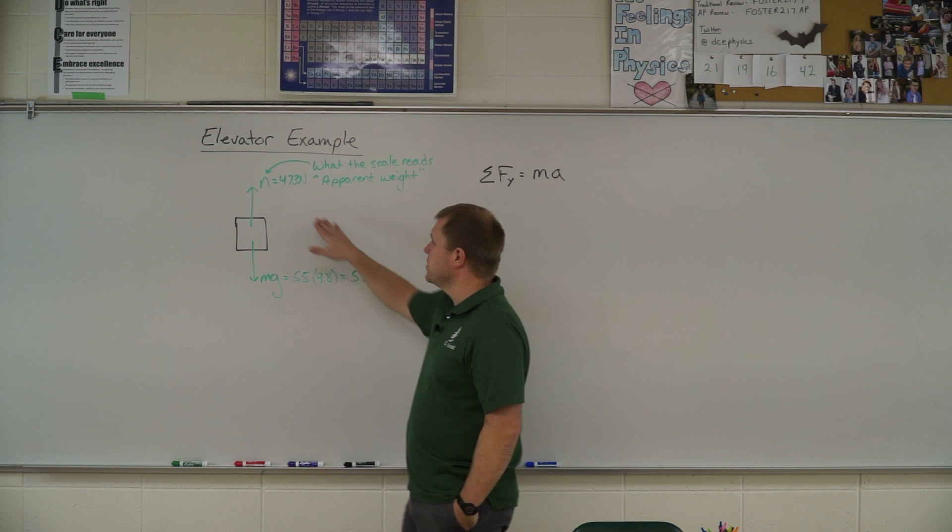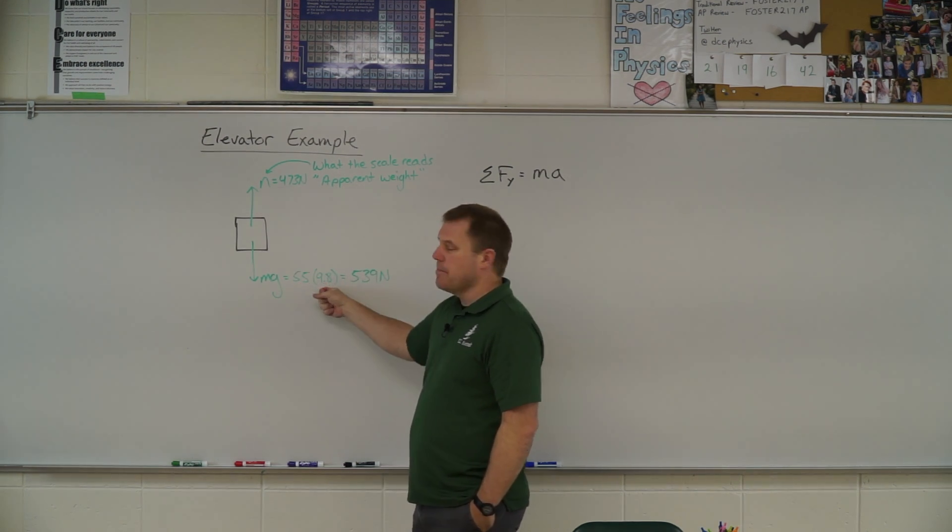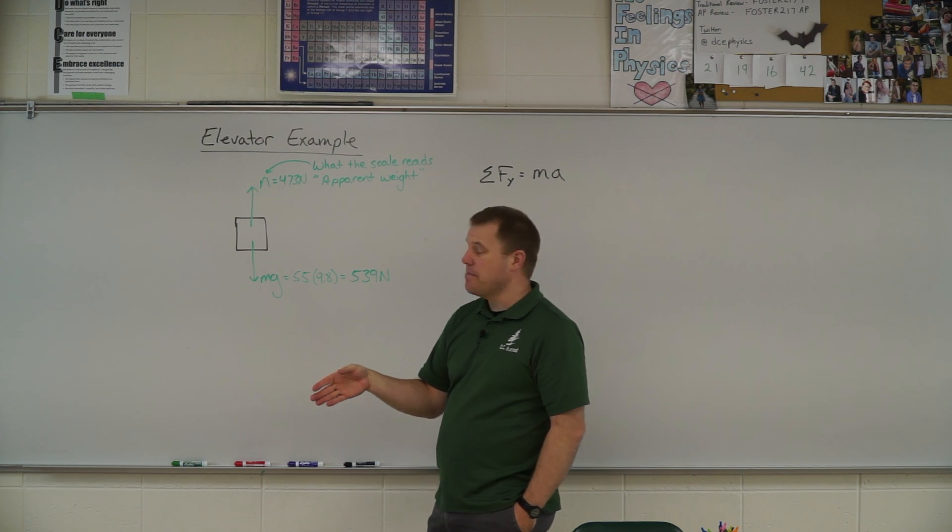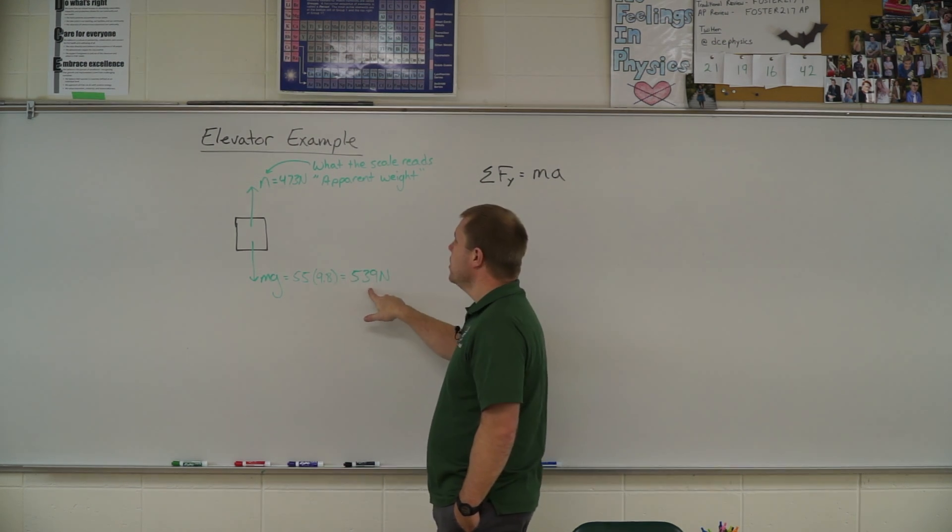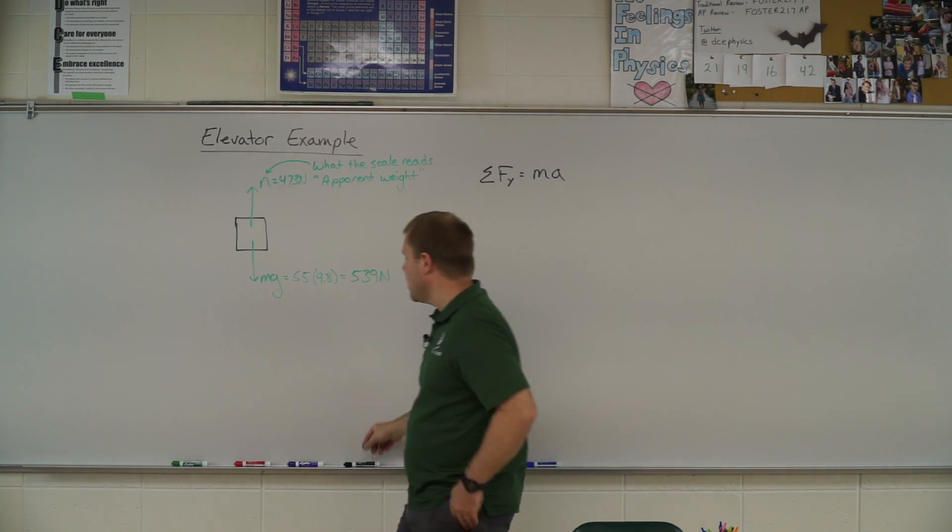Alright, so by looking at my numbers here, 473 Newtons, weight 55 times 9.8 because they give us kilograms. That was the mass. We had to multiply by 9.8 to get the weight. So if I look at these two forces, weight is larger. What does that tell me?